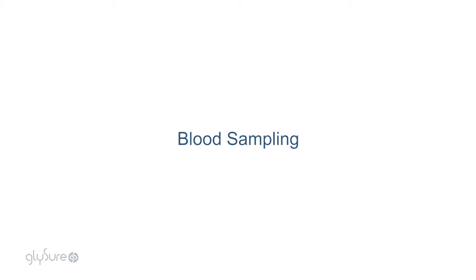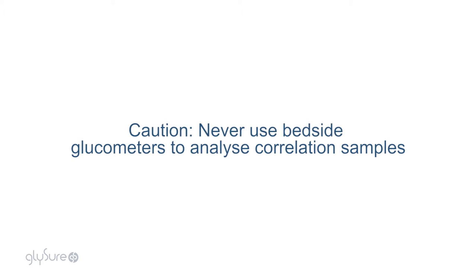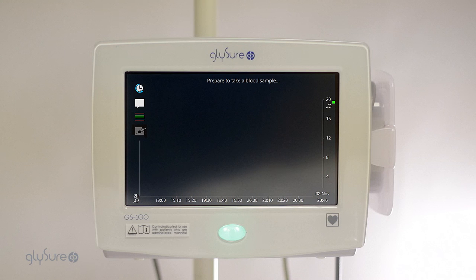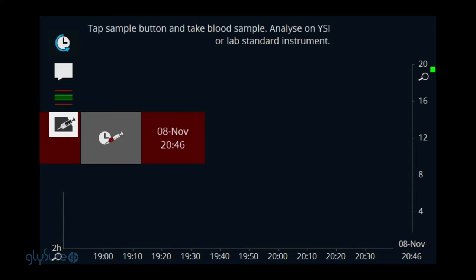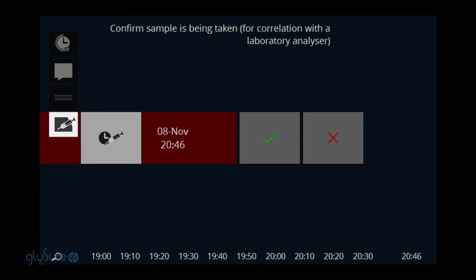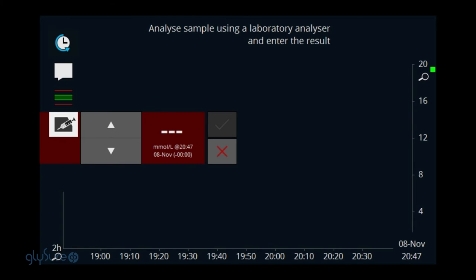Blood sampling. Caution. Never use bedside glucometers to analyse correlation samples. The system will prompt for a blood sample to be taken. Press the sample button to confirm that the sample is about to be taken. Press the green tick immediately before or immediately after the sample is taken.